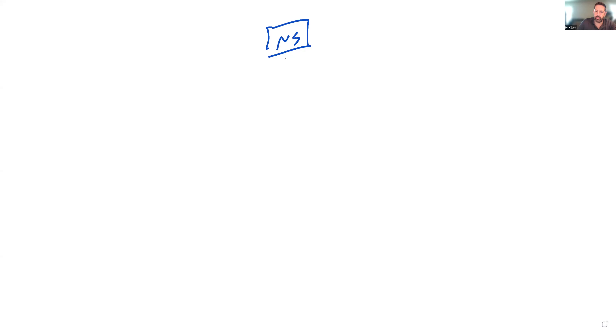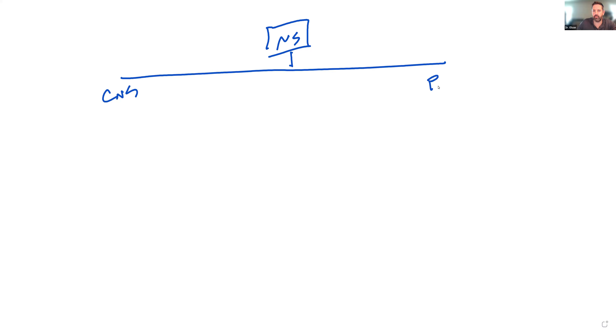Welcome to the Whiteboard Series 2.0 Neurophysiology. We're going to be discussing the cells of the nervous system, building on the first lecture about the divisions of the nervous system. We'll look at specific cells and their function and role. We can start by dividing the nervous system into the central nervous system and the peripheral nervous system.